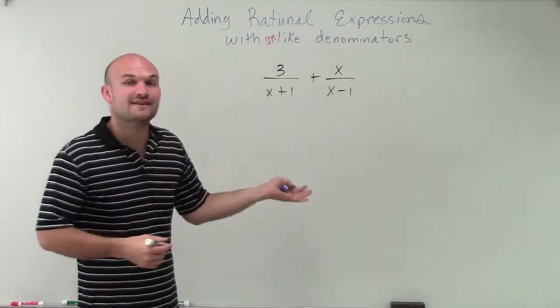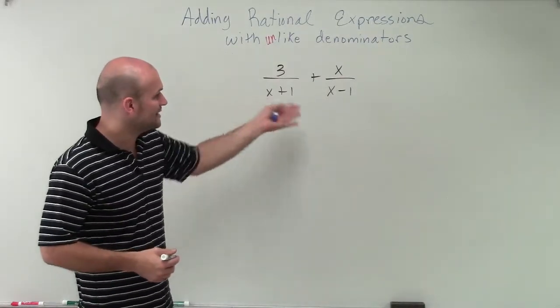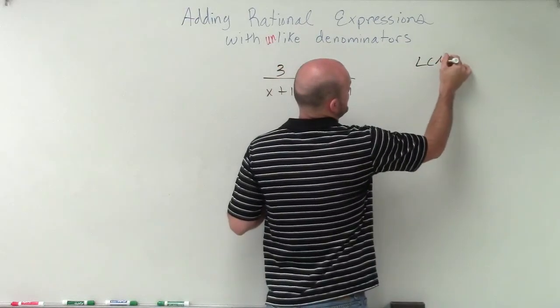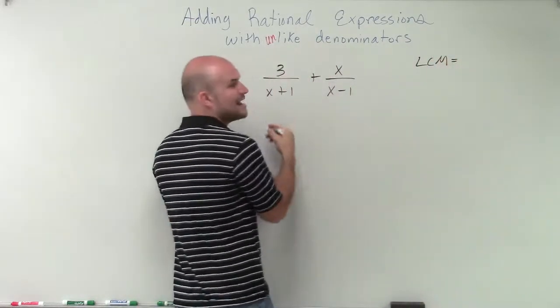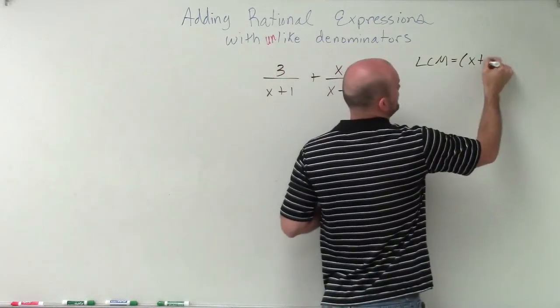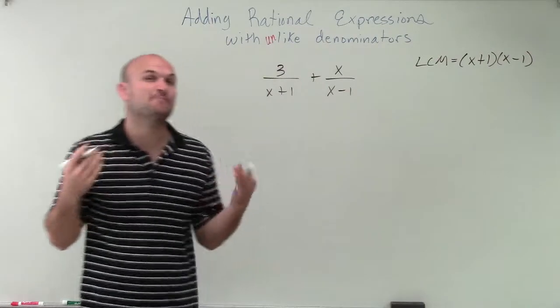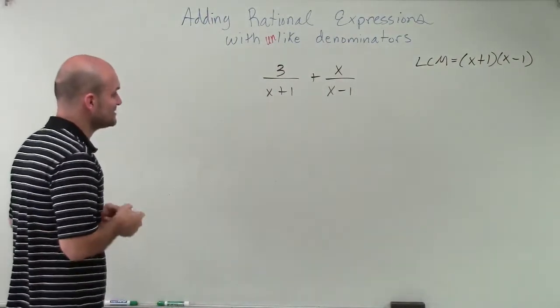Since I can't simplify them any further, and they don't really share anything else that I can pull out, I can just determine that my LCM in this case is just going to be my two denominators multiplied by each other: x plus 1 times x minus 1. That's going to be my least common multiple that both of these are going to be able to divide into.